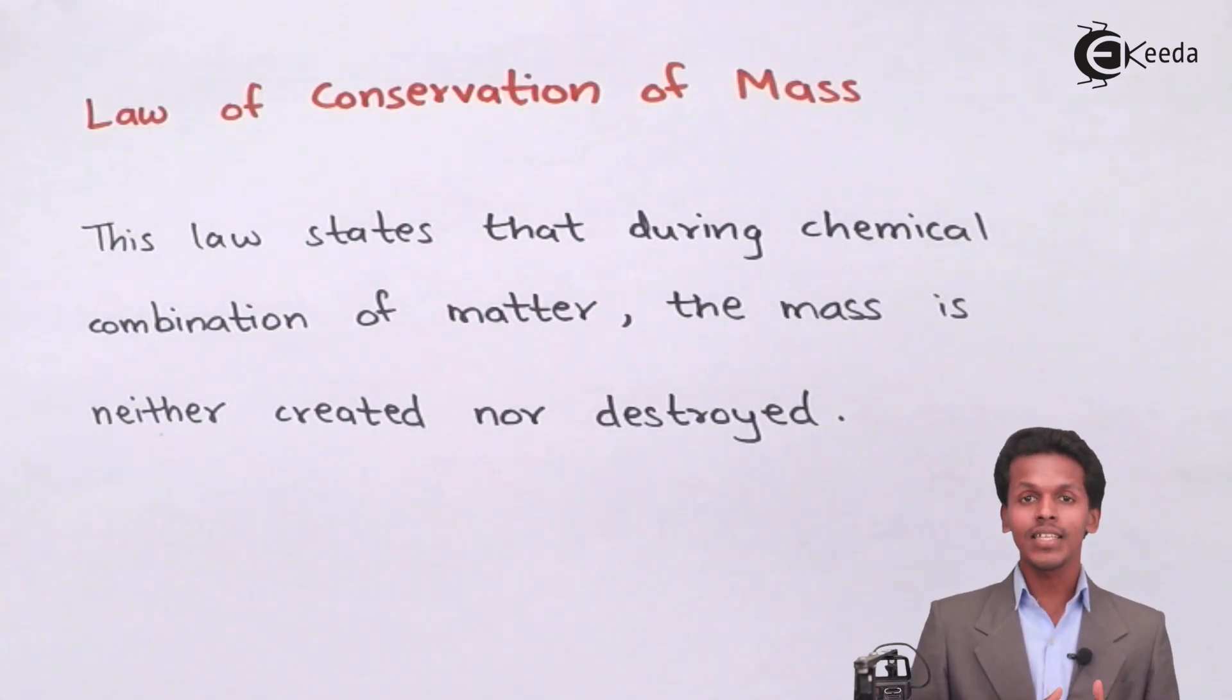If the reactants have a particular mass, that mass would be the same when the product is produced. The mass is not wasted. It has been converted from one form to another - from reactant to product. Let us discuss this in detail so you can understand it better.